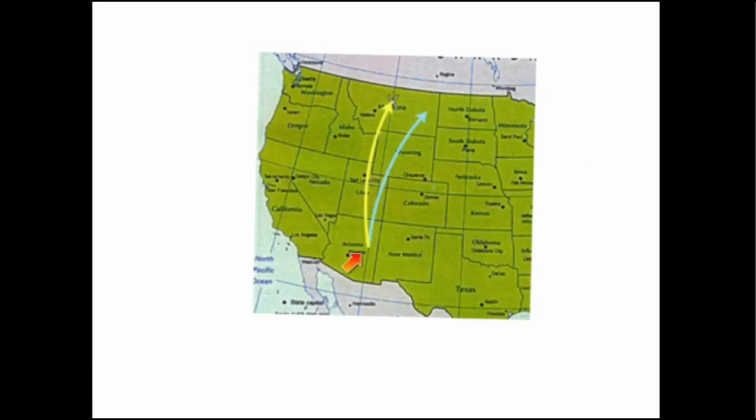If we tried to take a cannonball and launch it from here in Arizona up to Montana, the cannonball wouldn't end up where the X is. Because the earth is turning underneath us all of the time, it would go off on a curve and end up over here.